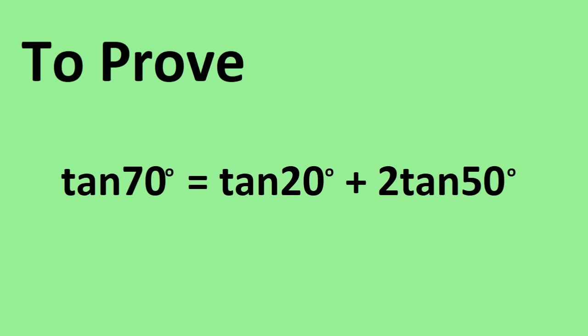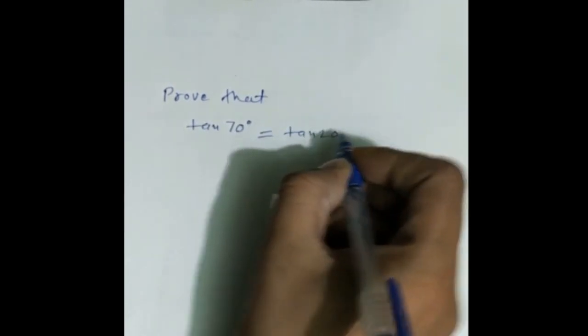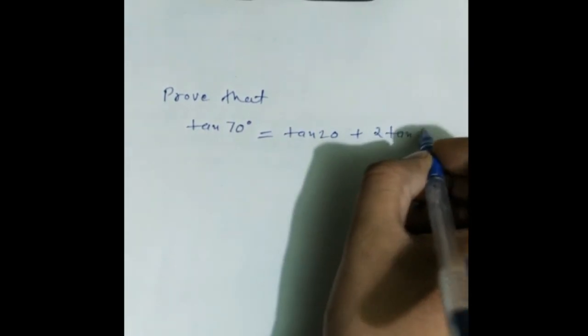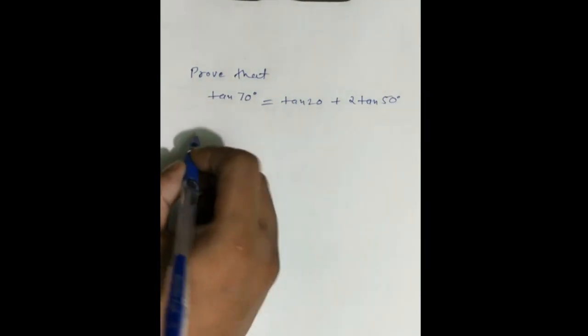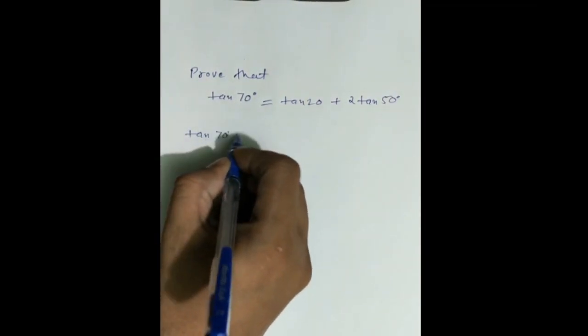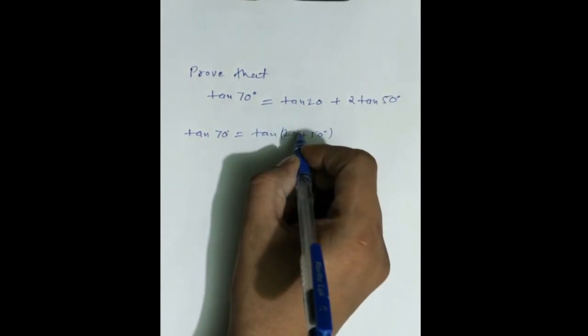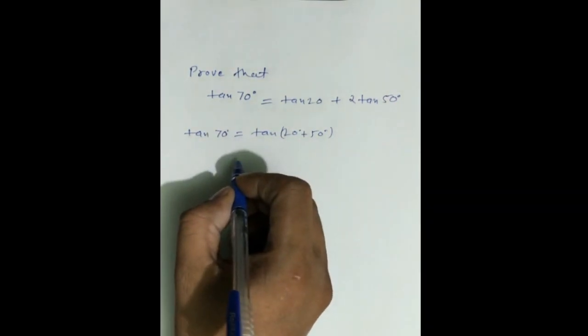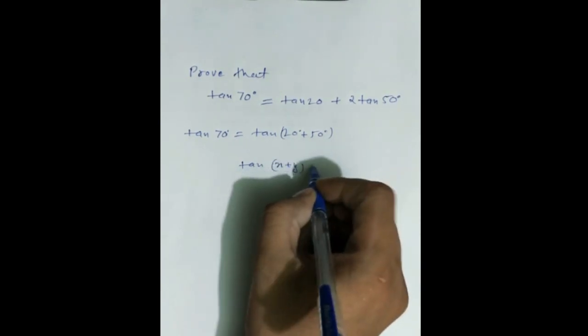Hey guys, welcome to our channel Maths for You. We ask the question: prove that tan(70°) equals tan(20°) plus twice of tan(50°). Take tan(70°) and break it into tan(20°) plus tan(50°). Now applying the formula: tan(x + y) equals